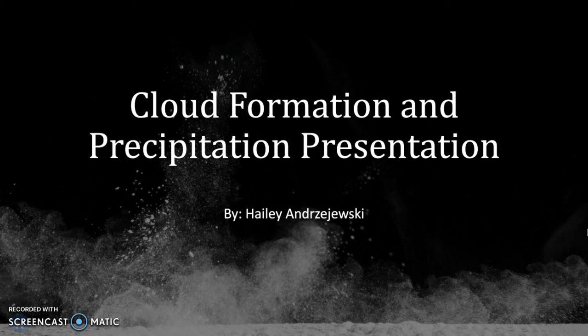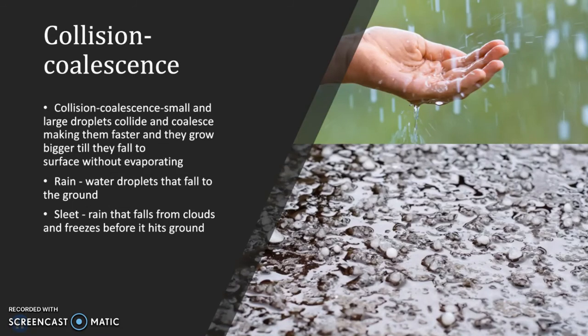Today we are going to talk about cloud formation and precipitation. Precipitation is formed by two processes, the first being collision-coalescence. This is when small and large droplets collide and coalesce, meaning they form into one mass or whole. This makes them fall faster and grow bigger until they fall to the surface without evaporating.